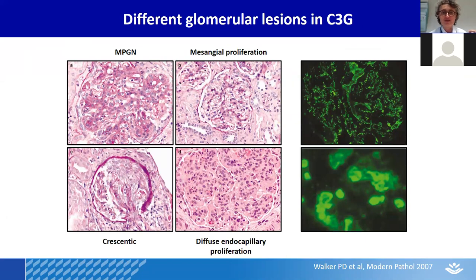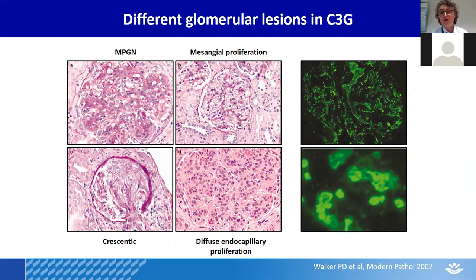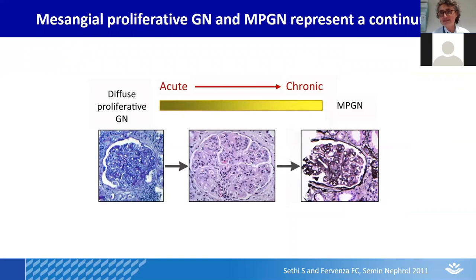I'm showing you now some pictures — pink images on the left-hand side of glomerular lesions, all proliferative but very different from one another. You don't need to be a pathologist to recognize the differences. In C3 glomerulopathy, the lesions can be very varied from patient to patient — always proliferative but more or less intensely so. What is common is the deposition of C3, which stains in green by fluorescence, as shown on the right-hand side. The level of proliferation and inflammation can also differ depending on whether you're looking at an early or more chronic stage of disease.